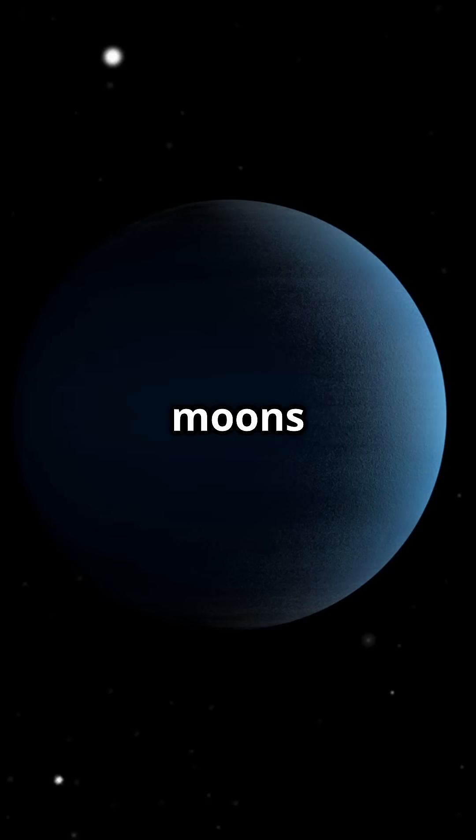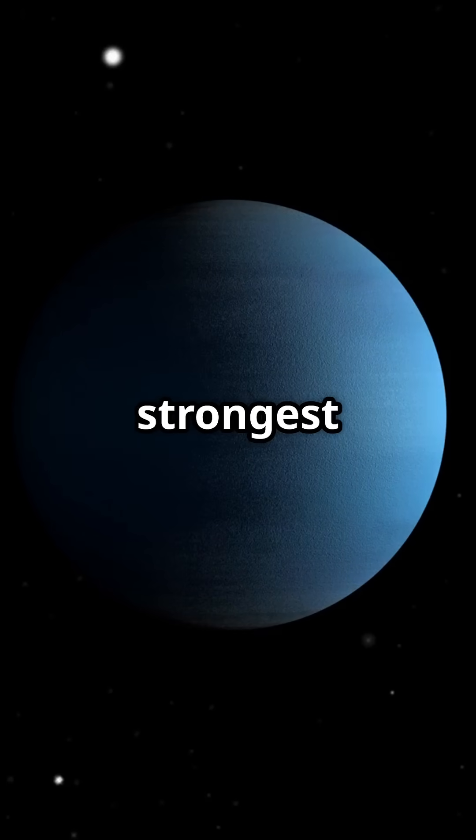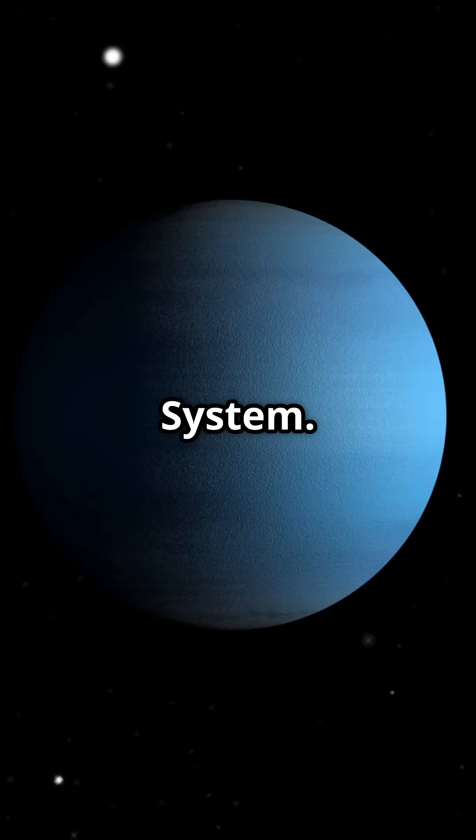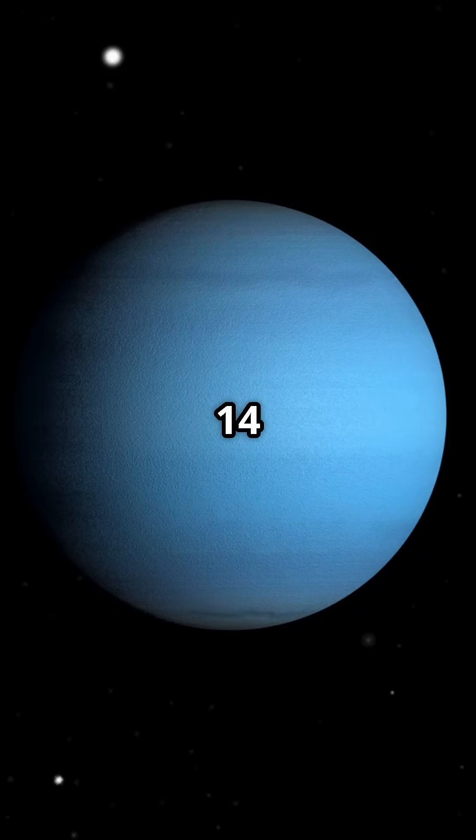It has 27 known moons and faint rings. Fourth, Neptune. It's deep blue and windy with the strongest winds in the solar system. Neptune has a diameter of about 49,500 kilometers and 14 known moons, with Triton being the largest.